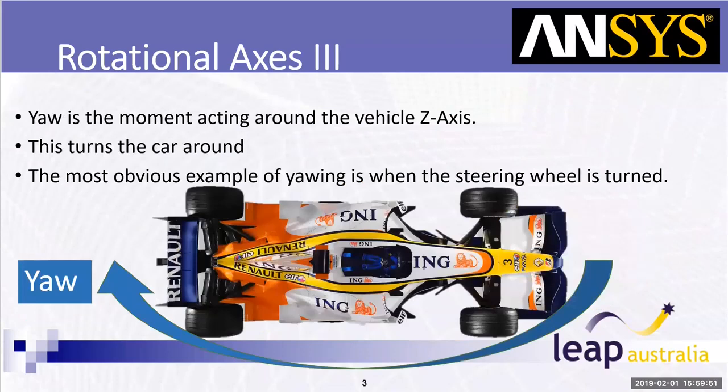This is the yawing moment, and this one is critical to the design of a Formula One in Schools vehicle, because we don't really want any yawing moments — we want to remain as straight as possible.